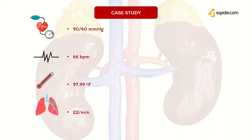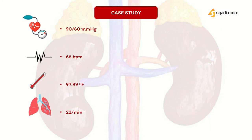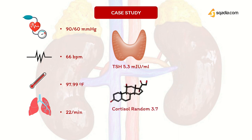Initial investigations yielded a normal baseline except TSH levels which were 5.3 milli international units per mL — the normal range being 0.46 to 4. Random cortisol levels were 3.7, which was slightly on the lower side. After further investigations, the senior makes a final diagnosis of Addison's disease and hypothyroidism.